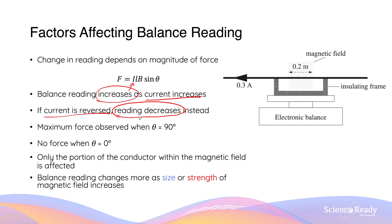The angle between the conductor and the magnetic field is also quite important. Maximum force is observed when the angle between the two is perpendicular, or 90 degrees. And no force will be observed when the angle is 0 degrees. So in other words, if the magnetic field is parallel to the conductor, there wouldn't be any mass reading changes observed in the balance.